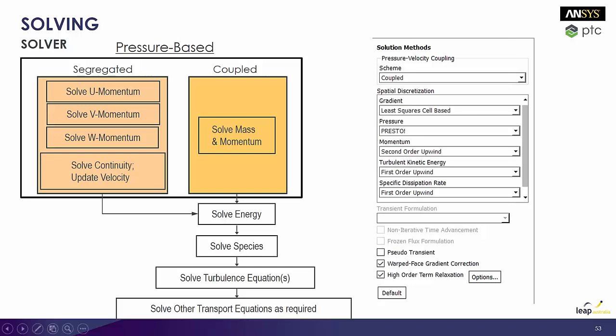So we can see on the right-hand side, we've got the scheme. We've got the pressure-velocity scheme that we're using. We're going to be using a coupled solver. And we've got a couple other spatial discretizations in there as well.